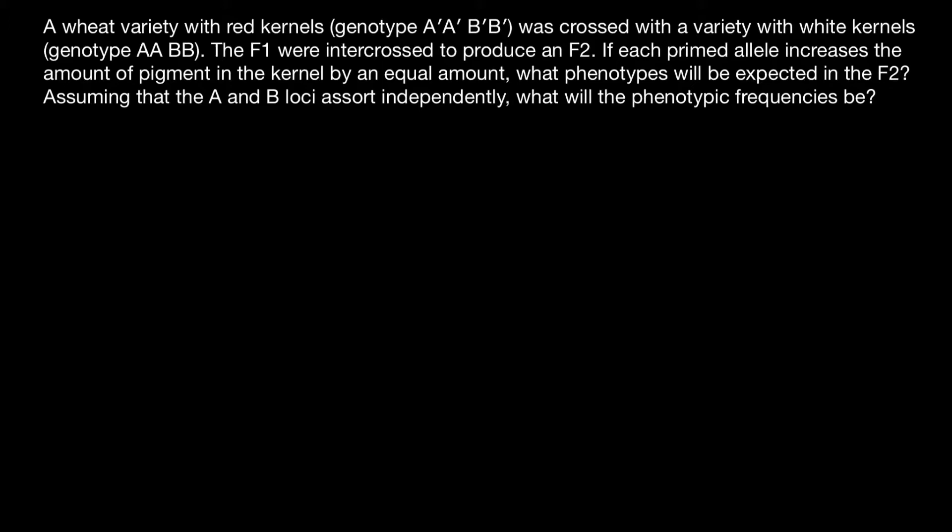We are told that one parent has red kernels, and the genotype is A'A'B'B'. And we cross with another parent, which has white kernels and whose genotype is AABB. And we call this parental generation.